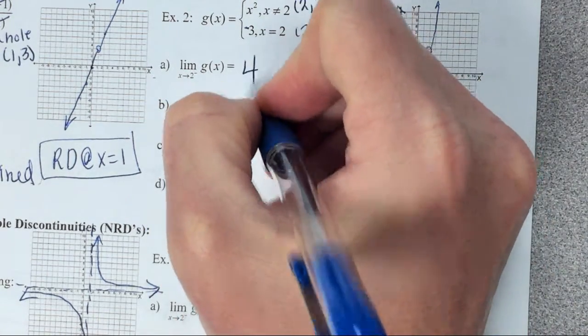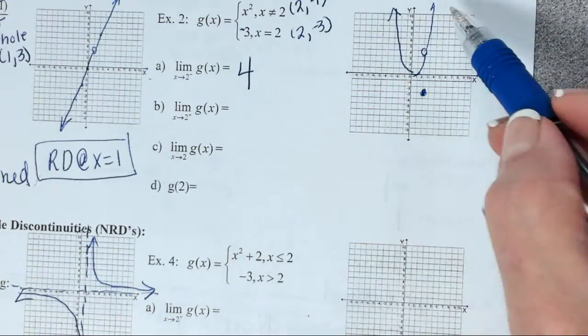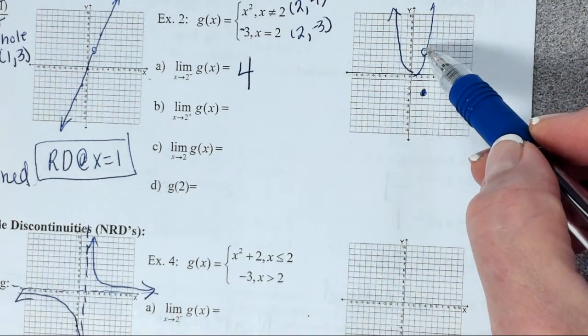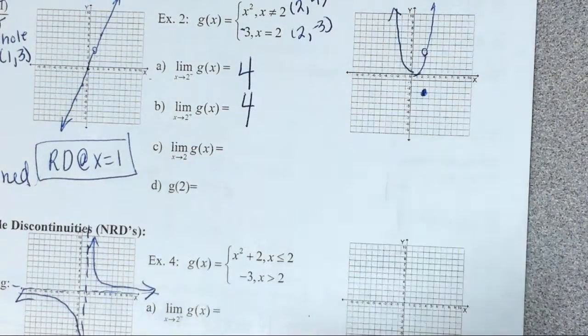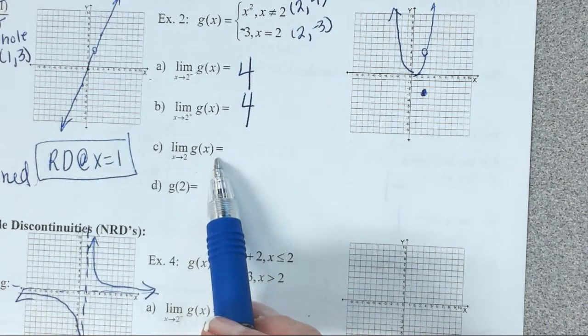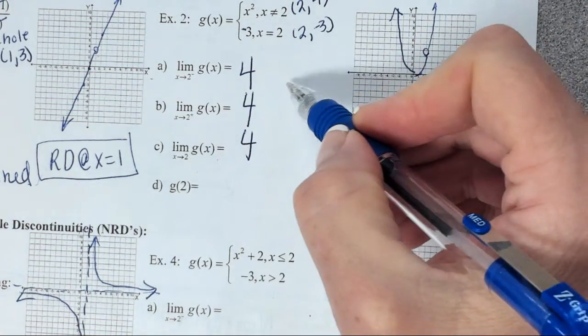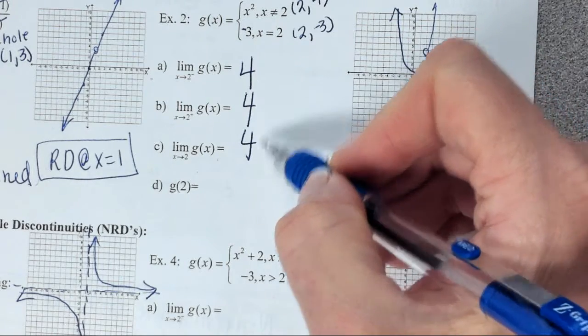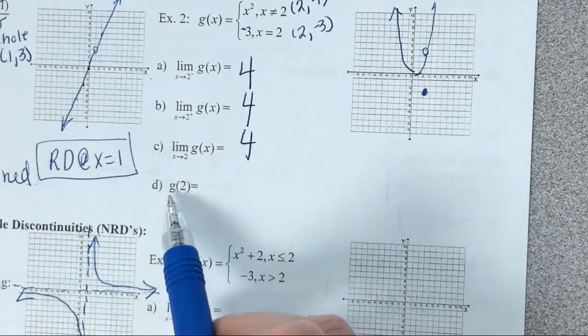4, yes. Matthew, what about if we find the limit from the right side? What are we approaching? 4 again, yes. And so, Lizzie, what's the general limit going to be then? 4. If the limit from the left and the limit from the right is the same, then the general limit has to be 4. But here is what might be different, g of 2.